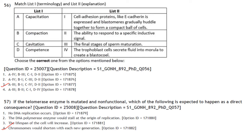Match developmental terminology: Capacitation — final stages of sperm maturation; Compaction — cell adhesion proteins like E-cadherin are expressed and blastomeres huddle together to form a compact ball of cells; Cavitation — trophoblast cells secrete fluid into the morula to create a blastocyst; Competence — the ability to respond to a specific inductive signal. Answer is option 3: A3, B1, C4, D2.